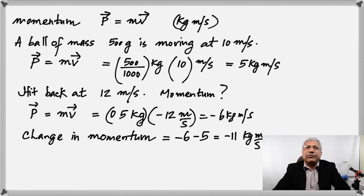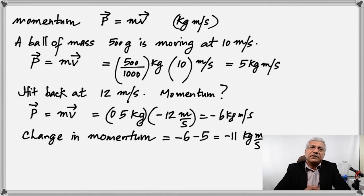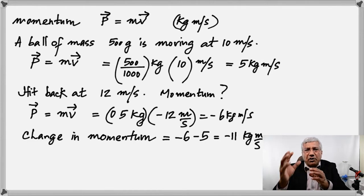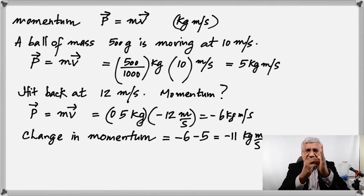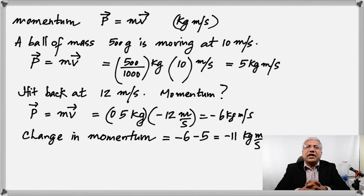The ball can't come back on its own — it should have been hit by a bat or bounced off a wall. The time of contact between the ball and the bat is obviously going to be really small, because it just touches and comes back. If the time of contact is given, can we find the force? Yes — that's where the definition of impulse becomes very important.